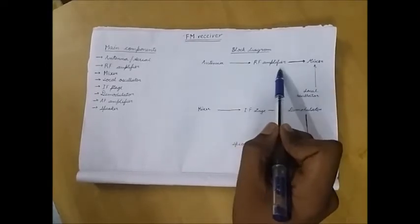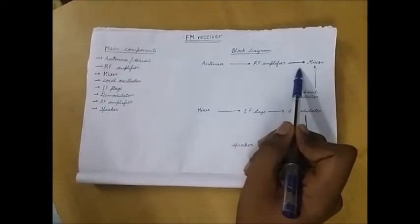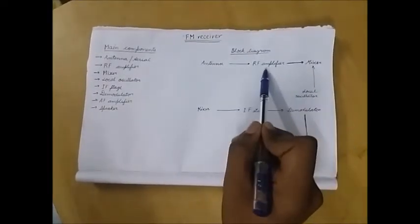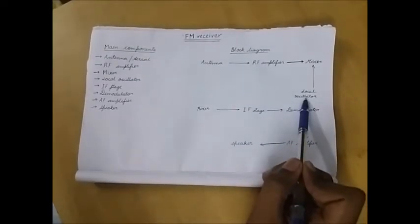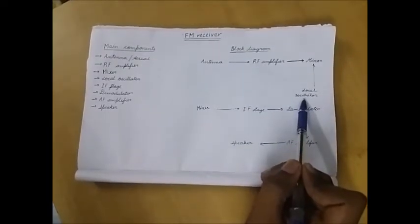Then the mixer stage comes. Mixer receives the frequency from the RF amplifier and the local oscillator. It takes the sum and difference of the two inputs.